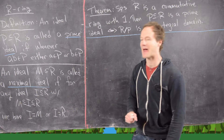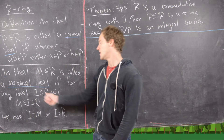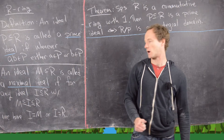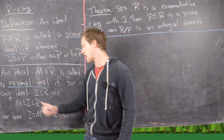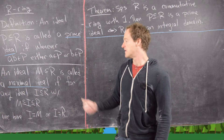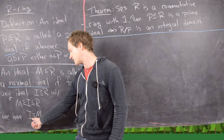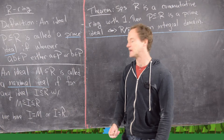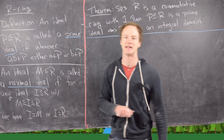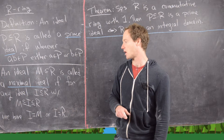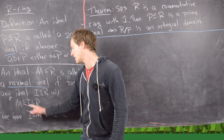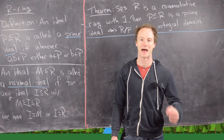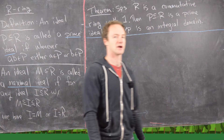An ideal M is called maximal if, for any other ideal I that you try to fit between M and R — so M is a subset of I, which is a subset of R — then you get restricted down to the fact that I equals M or I equals R. So you cannot fit any other ideal strictly between a maximal ideal and the entire ring.